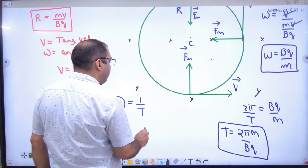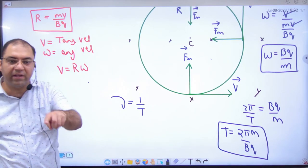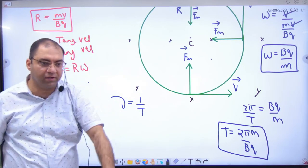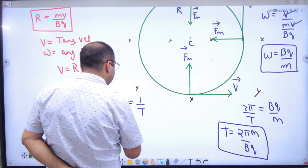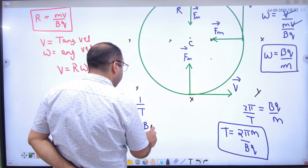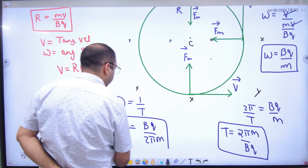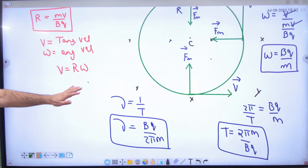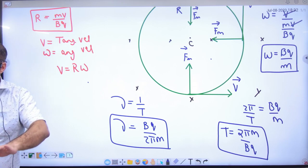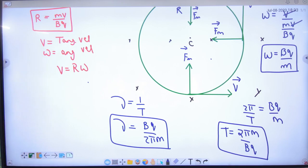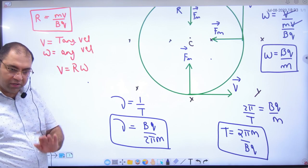Frequency, what happens, one upon time period is frequency. How much time period will cut in one second, frequency. So one upon time period, take this as reciprocal, what will come: BQ divided by 2πM. This is very important formula. This will come to your work when you will do it. Important result, very important result. All these formulas now, one thing to remember.